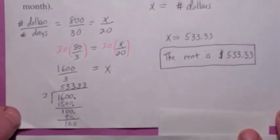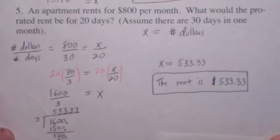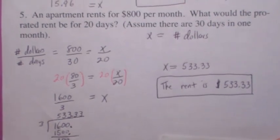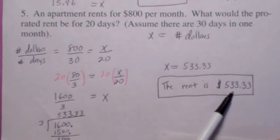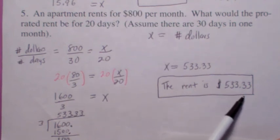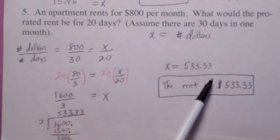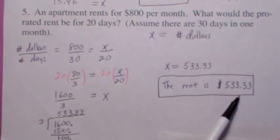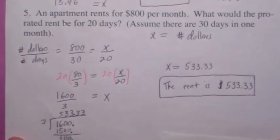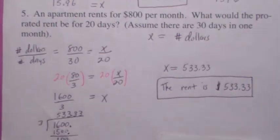Now, I should mention this more often. Whenever you're working a problem like this, make sure your answer makes sense. If this were $5,333 and 33 cents, that wouldn't make sense, would it? Because it's $800 for the whole month. So it makes sense that if you had 20 days, this number is a reasonable answer, isn't it? Alrighty, we'll see you next time. Bye-bye.